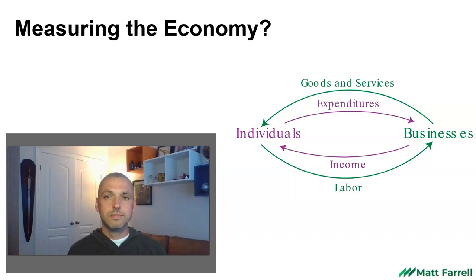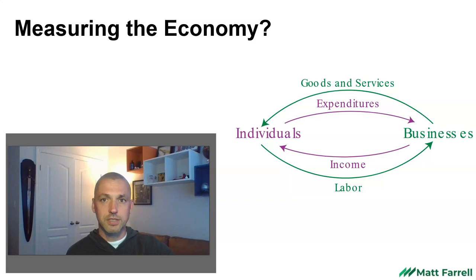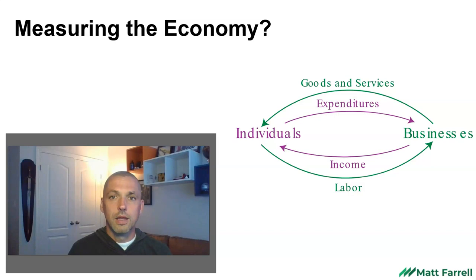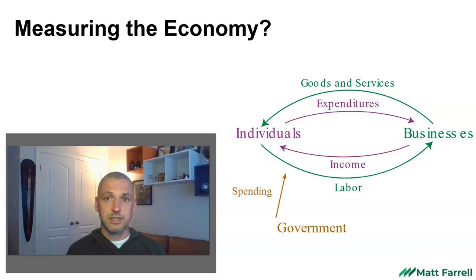Conceptually, we can envision this as a cycle. When I go to work, my employer gives me money — I sell my labor to my employer, that's an input. But with my money, I can turn around and buy things from a business that then hires more people to work. Those people use their income to buy more goods, and it keeps going around and around. It is a circular flow of the economy. Of course, businesses and individuals aren't the only actors — the government intervenes in this cycle as well.